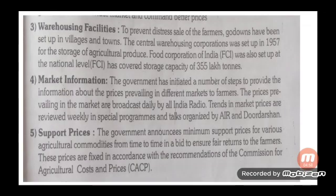Third measure: Warehousing facilities. To prevent distress sale by farmers, godowns have been set up in villages and towns. The Central Warehousing Corporation was set up in 1957 for the storage of agriculture produce. The Food Corporation of India was also set up at the national level, with a covered storage capacity of 355 lakh tons.